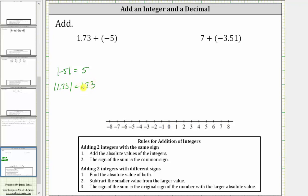Now we subtract the smaller value from the larger value, which in our case will be five minus 1.73. We want to line up the corresponding place values. Notice the five and the one are both in the ones place value. For the five, we'll put a decimal point to the right and add two zeros.